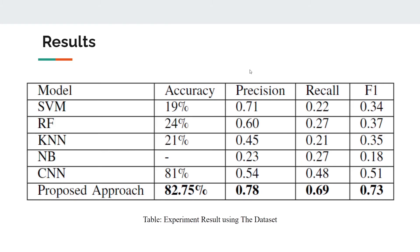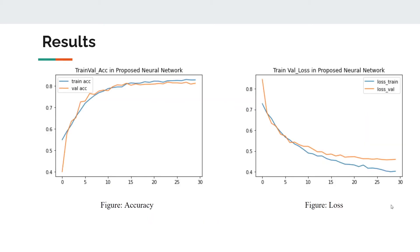Our proposed approach achieves 82.75% accuracy, 0.78 precision, 0.69 recall, and 73% F1 score, which is the highest among all the existing tested machine learning approaches. These are the figures showing the accuracy and loss curves of our proposed neural network model.